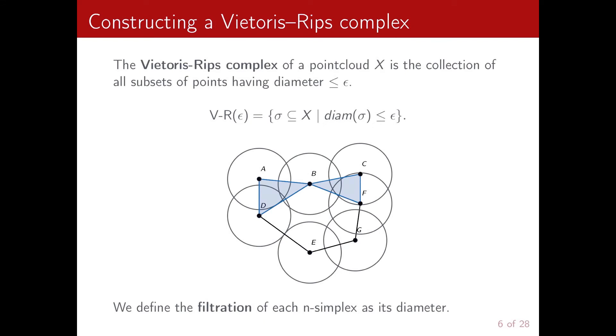We can obtain a geometric realization of an abstract simplicial complex starting from a point cloud by using a Vietoris-Rips construction. Given a parameter epsilon, we create the Vietoris-Rips complex as the collection of all the subsets of points having a diameter less or equal to epsilon, where we indicate the diameter of a subset as the maximum distance between any pair of points. Moreover, we can use the diameter of each simplex as its filtration value.